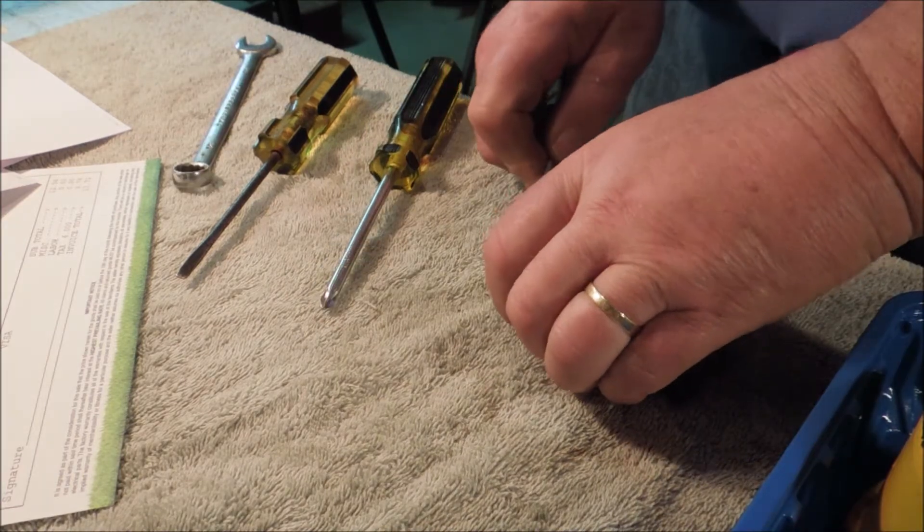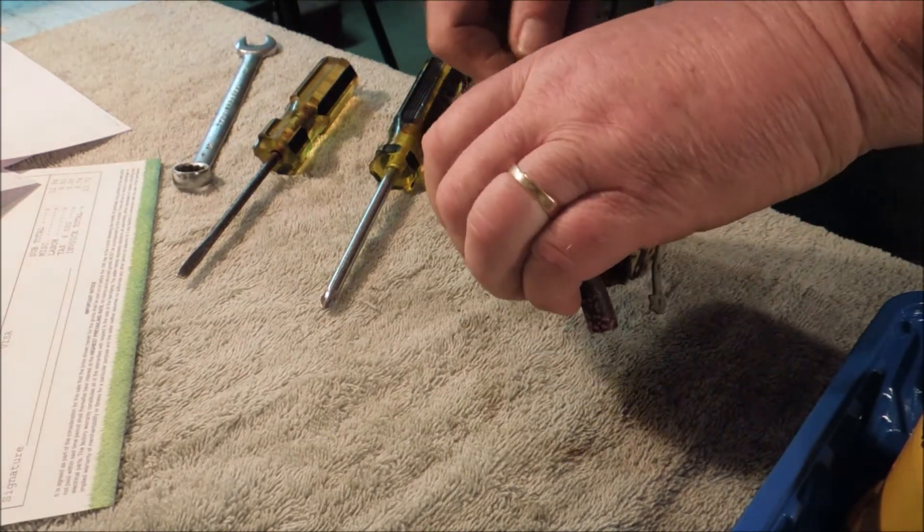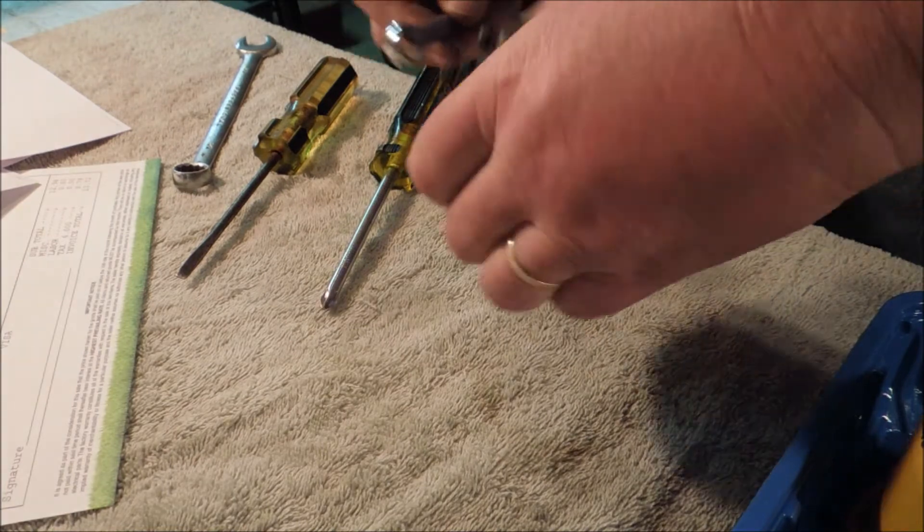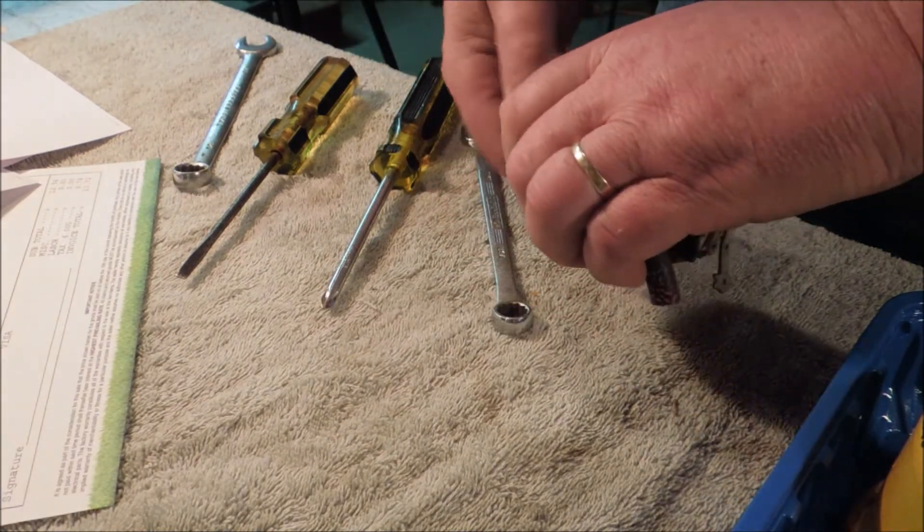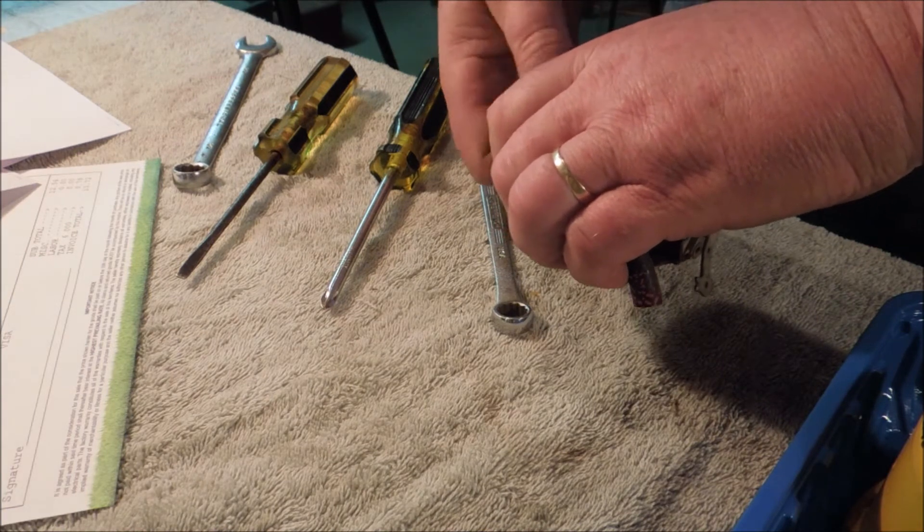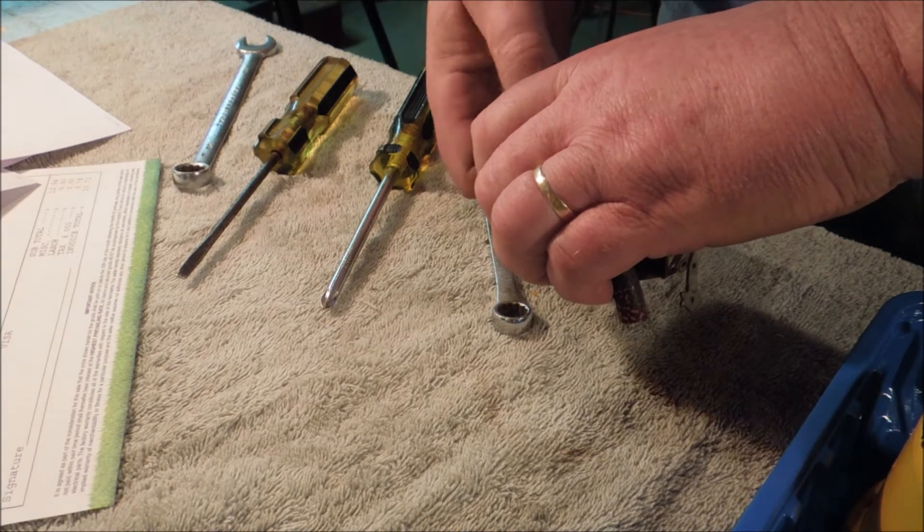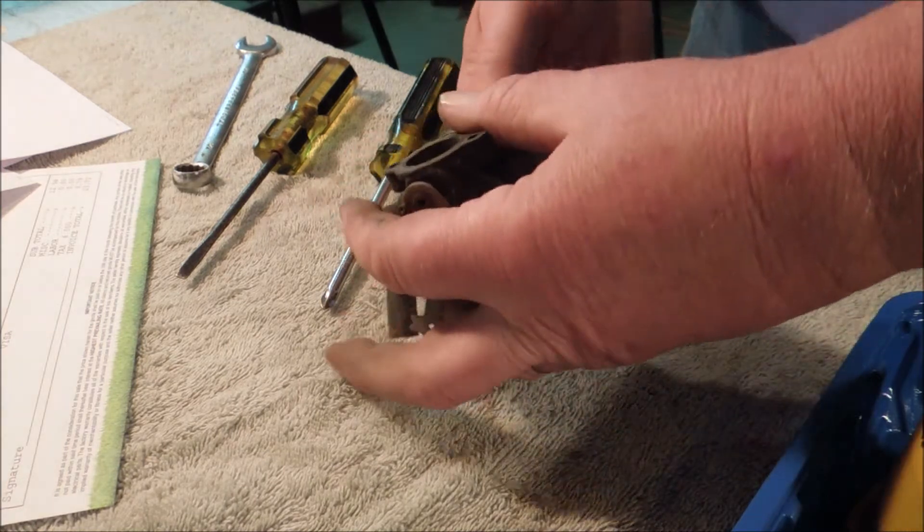Seven sixteenths box end. This is a brass screw and you don't want to use an open end on it unless you absolutely have to. Ideally a six point wrench or a six point socket would be better. But it came apart fairly easily.